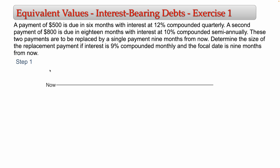At this moment you owe $500 and $800, but neither debt is scheduled to be paid today. The first debt of $500 is scheduled to be paid in six months, so you need to find the future value — the maturity value — of that $500. This debt has an interest rate of 12% compounded quarterly, so m equals 4. You need to count how many quarters are in six months to find n.